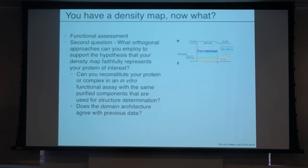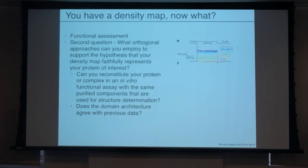Another thing I always find extremely important is a functional assessment. What sort of orthogonal approaches can you employ to demonstrate that your protein actually does what you think it's supposed to do? This is just an electrophysiological trace from a paper we did a few years ago where we added different concentrations of calcium. This is a calcium-dependent channel, and we saw larger conductance as we increased the calcium concentration — a well-known feature of the protein. In our in vitro purified system, we were able to show that the protein has the function we thought it had, and when we interpreted our structure, we could understand how calcium binding could influence conformation.